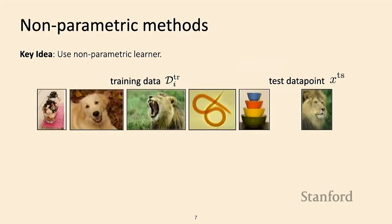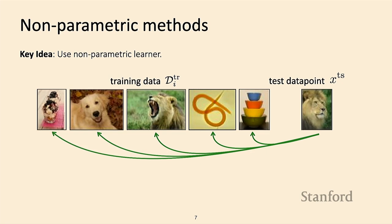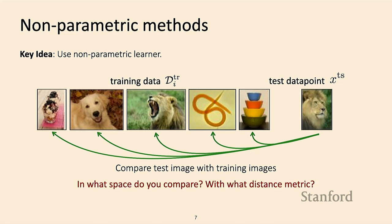For the canonical few-shot image classification problem, if we want to do nearest neighbors, we take our test data point and compare it to each training example. Whichever training example it's most similar to, we output that example's label. The key question is: in what space do we compare? What distance metric do we use?